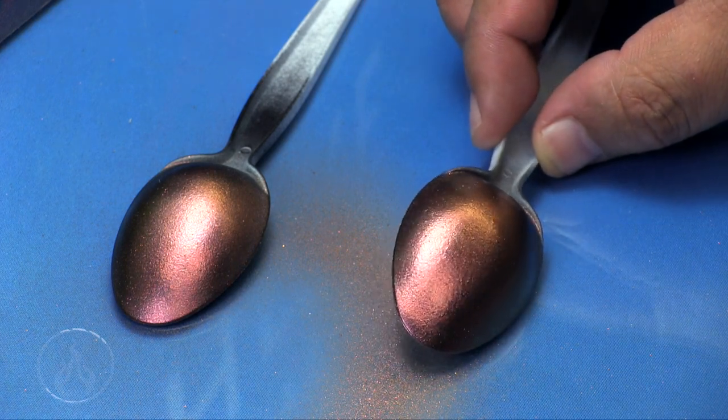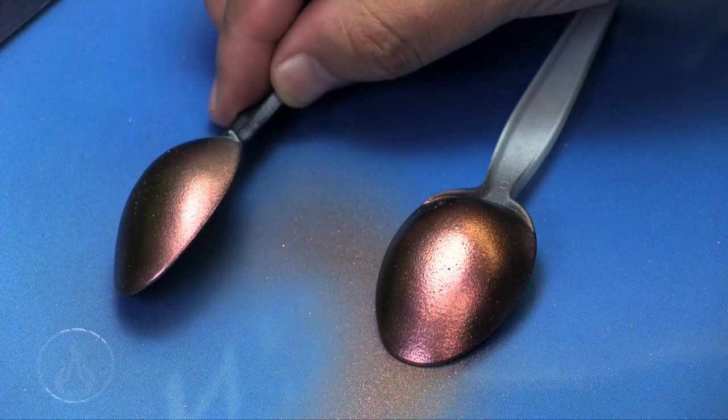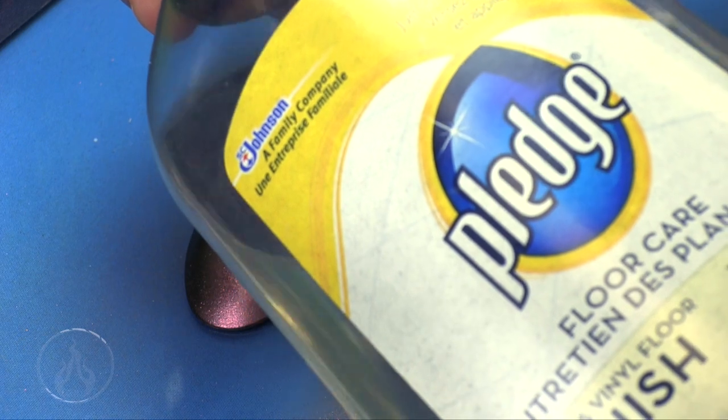I quickly gave the one spoon a little bit of a buffing and I end up kind of pulling the surface again because it stayed tacky for some strange reason. You can see the other gloss spoon as well.